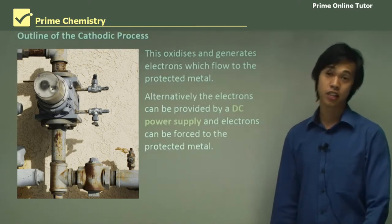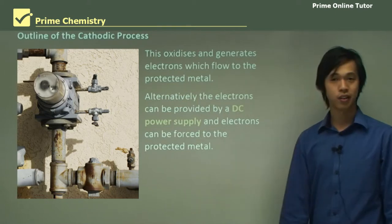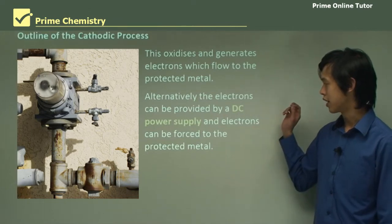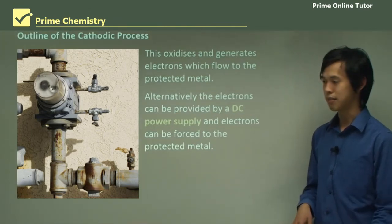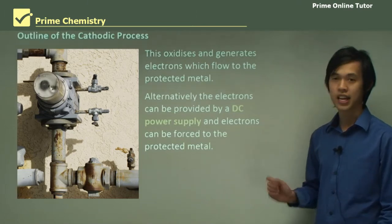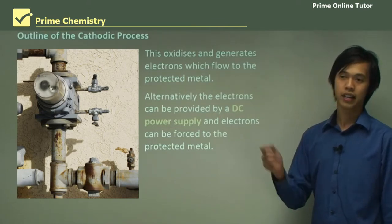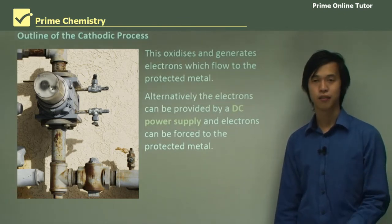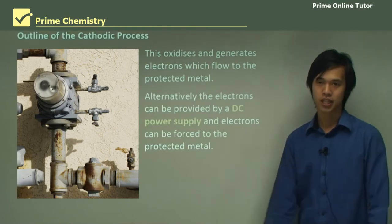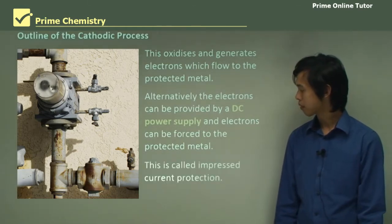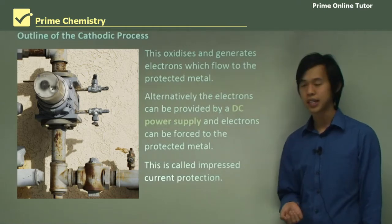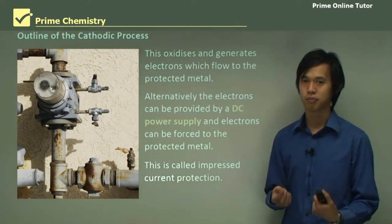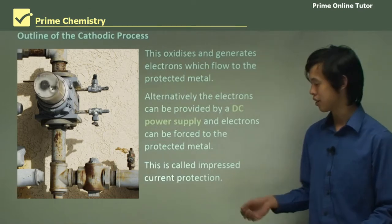Alternatively, if we don't have access to pure zinc or pure magnesium but have a good supply of DC electricity — maybe from a solar panel — we can put electrons onto our protected metal by attaching it to the negative end of a DC power supply. By doing that, it pumps electrons onto the metal we want to protect, forcing it to become a cathode and making it protected from oxidation. When we use a DC power supply, we call this impressed current protection — it forces electrons from a voltage source onto the protected material.